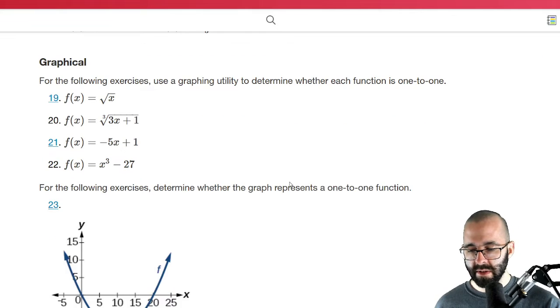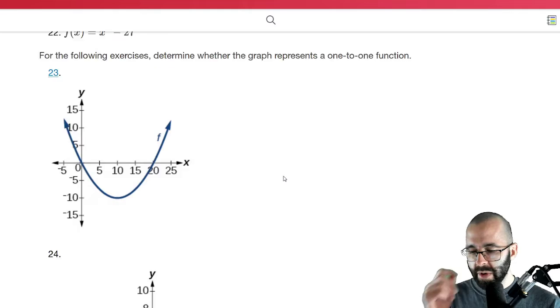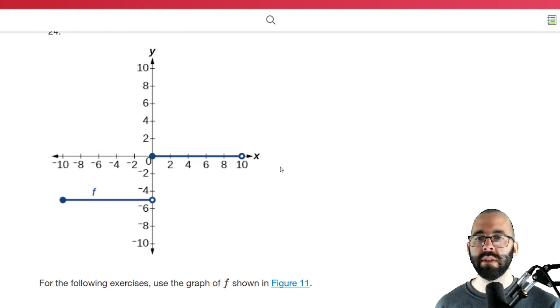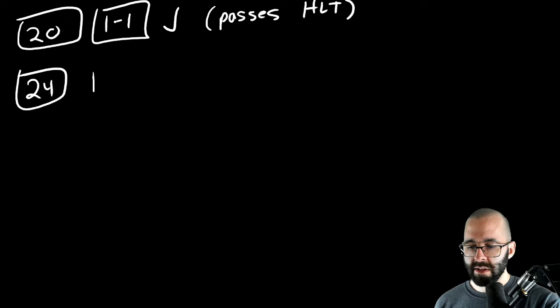Let's look at 24. 24 says determine whether it's one-to-one. Well, I can draw a horizontal line right here that crosses the graph many, many, infinitely many times. It fails the horizontal line test. So that means it's not one-to-one. There's no inverse function.